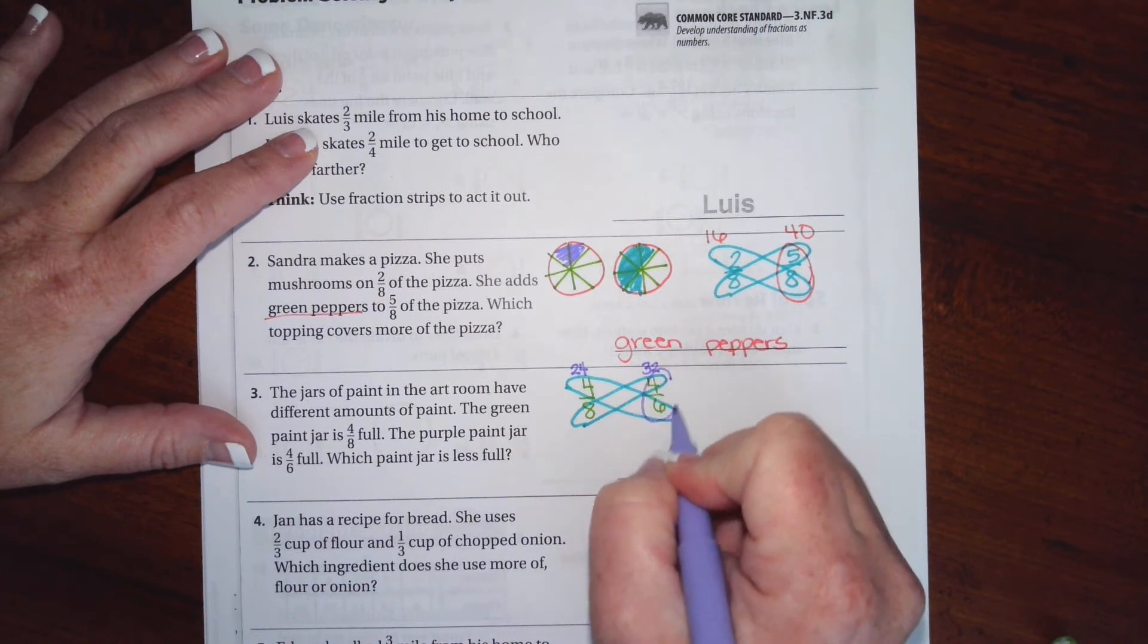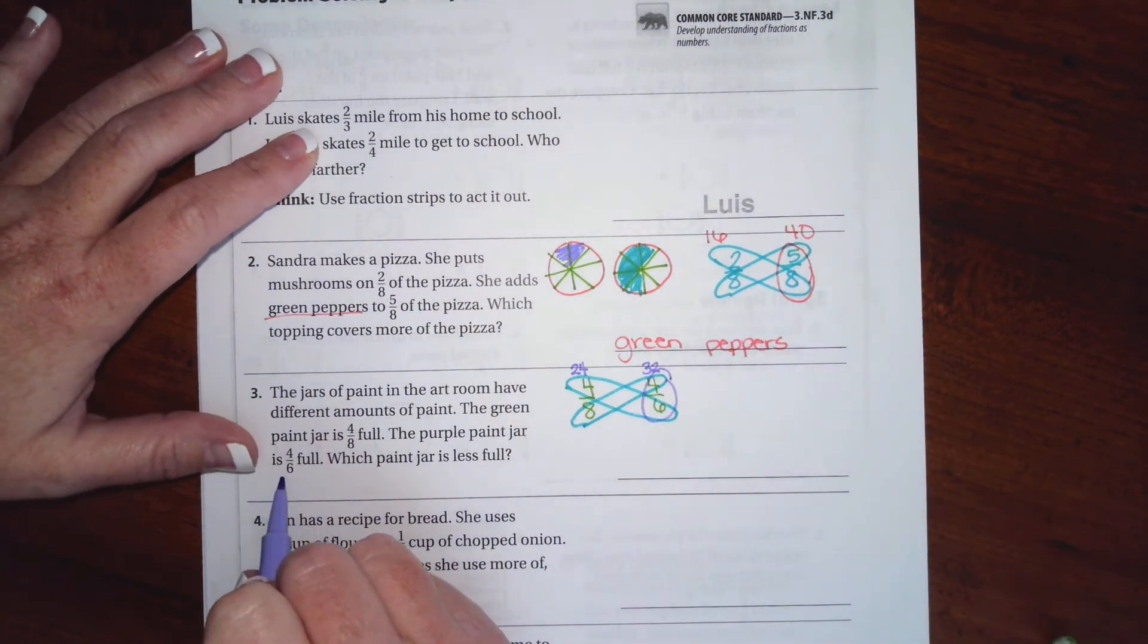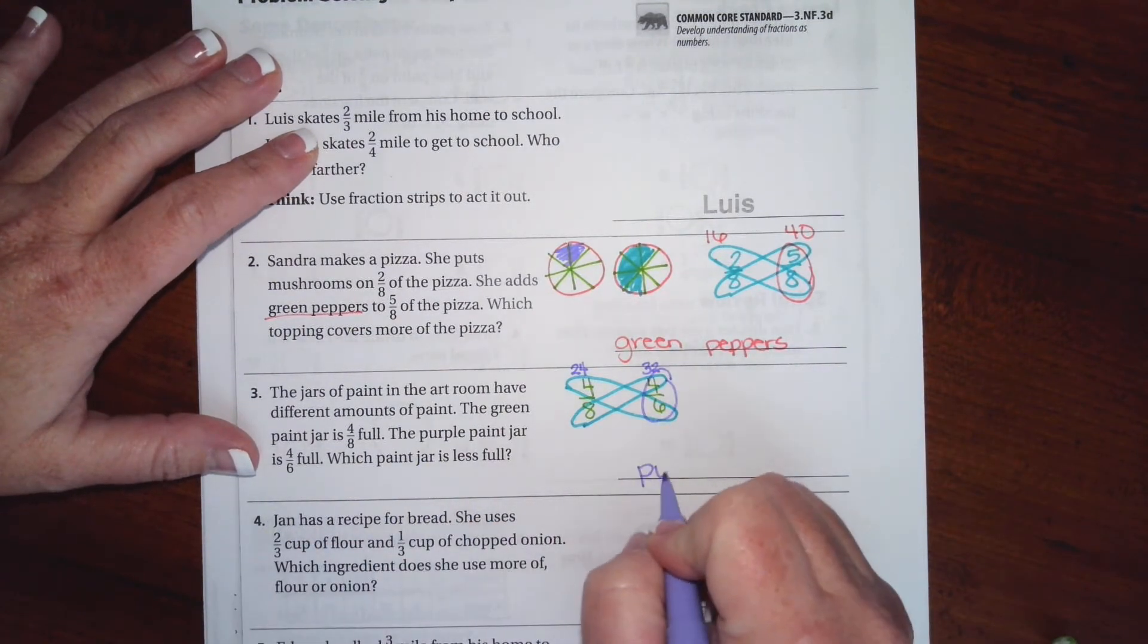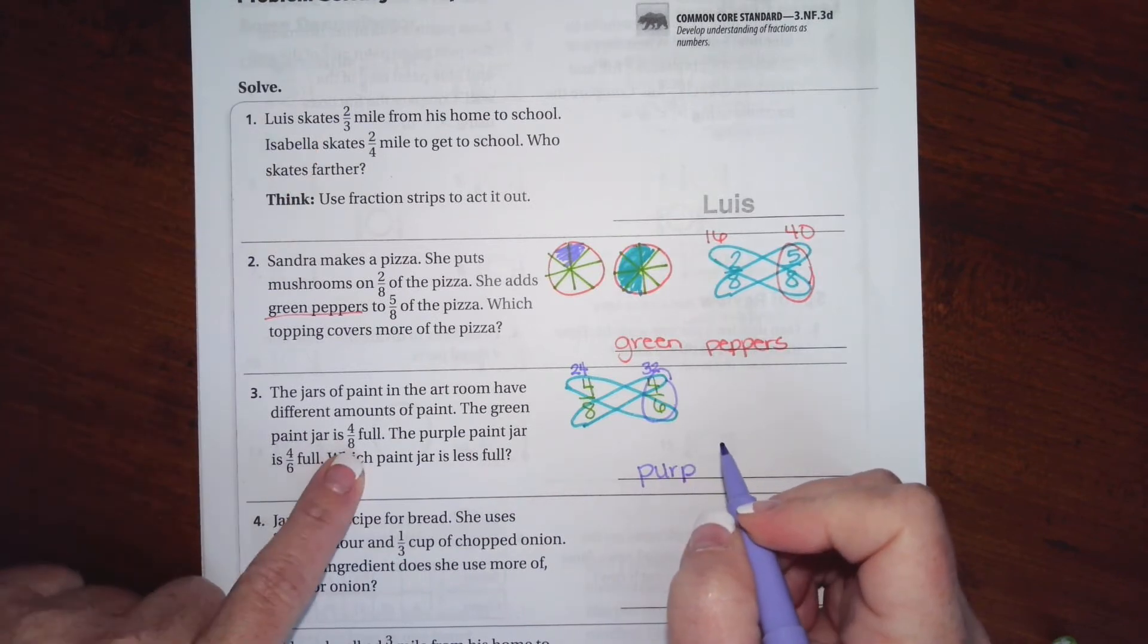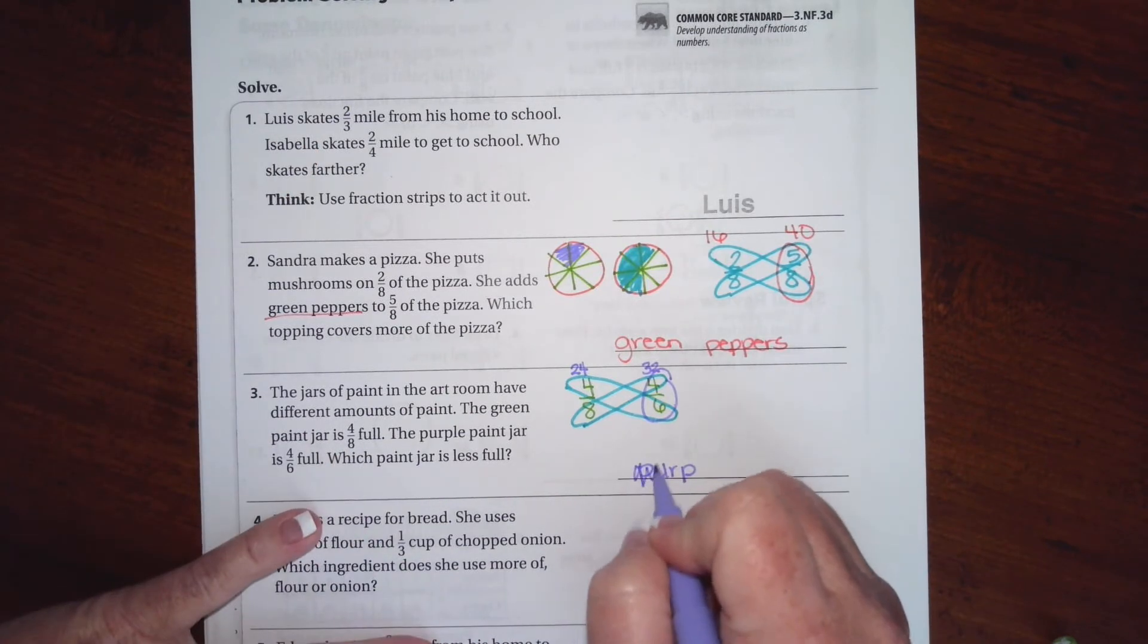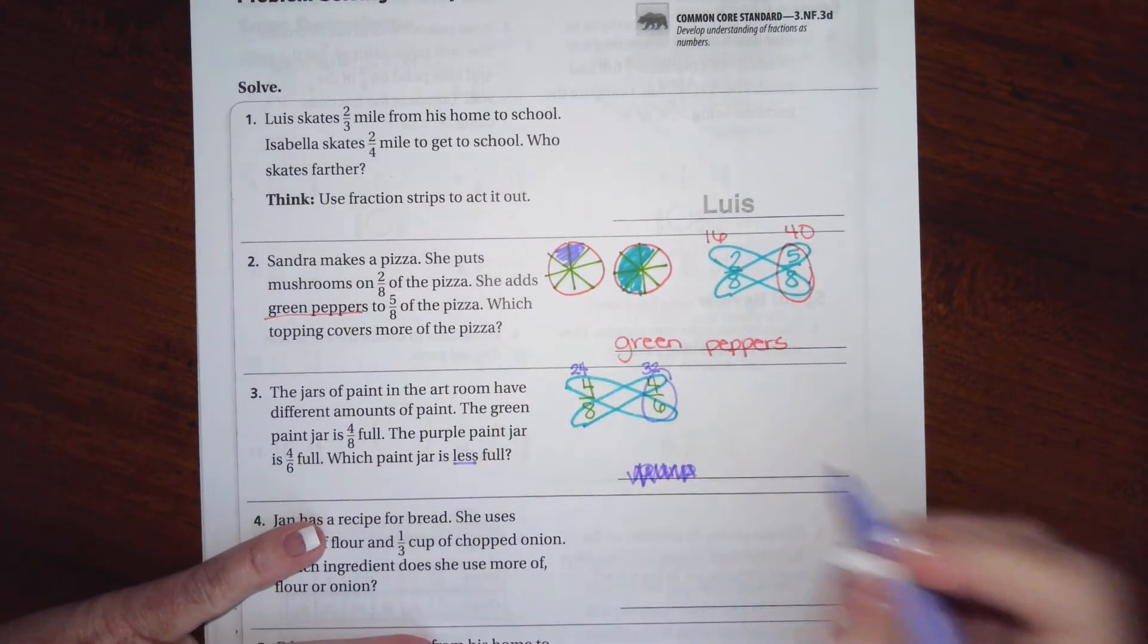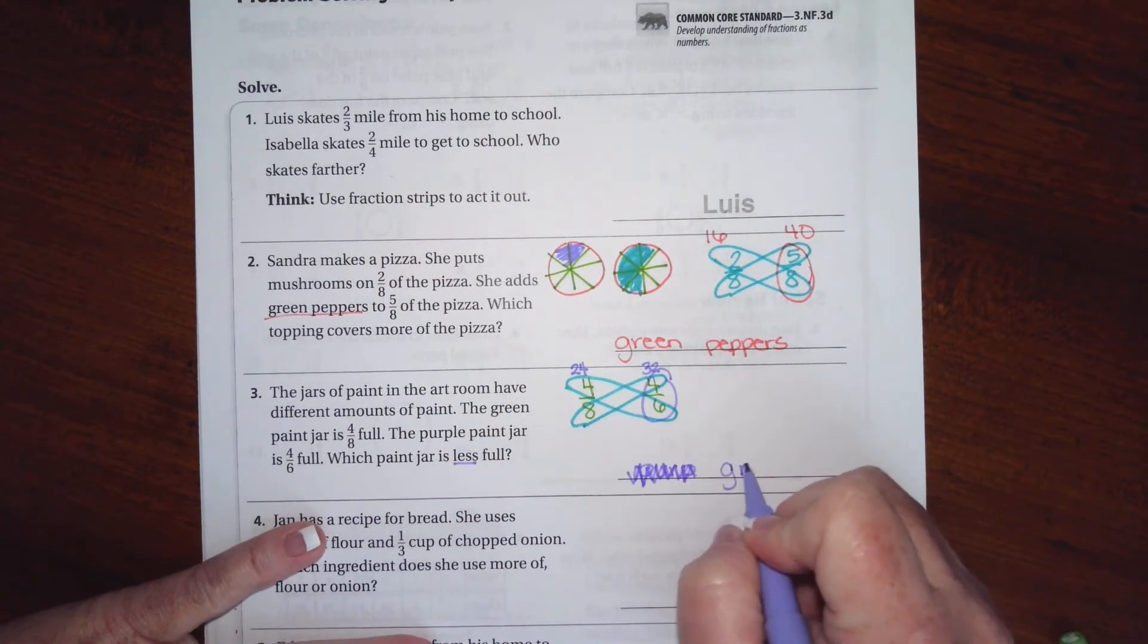And 8 times 4 is 32. Well, that means that this one is bigger, so the one that is 4/6 is purple. Oh, I'm sorry, it says less full. So that's actually going to be the other one. We just got to read all the way through. This is less full. So that one is going to be green.